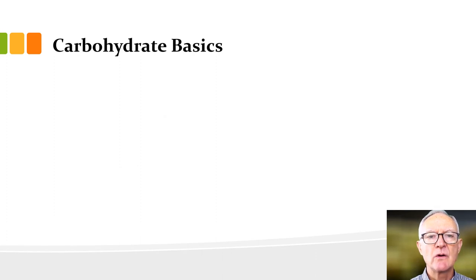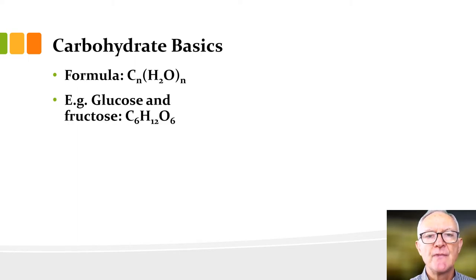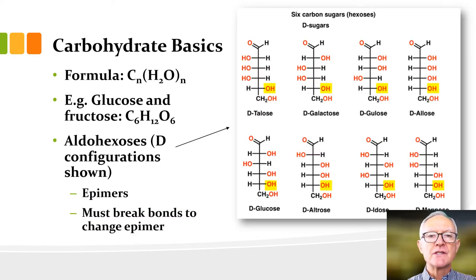That is why we need to talk more about sugars — they're often conjugated to things in wine. Let's talk about carbohydrate basics. Carbohydrates are hydrated carbon: for every carbon, typically there is one water. In glucose, for example, there are six carbons and six waters, so the formula is C6H12O6. There are a whole bunch of six-carbon sugars; we call those aldohexoses if they have an aldehyde group, or ketohexoses if they have a ketone group. Glucose is an aldohexose.